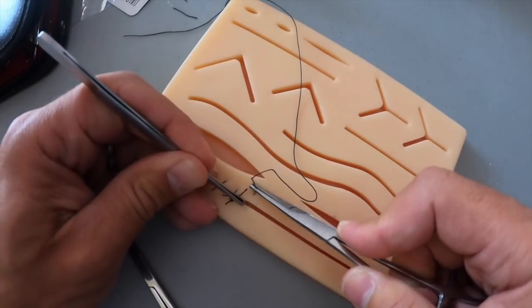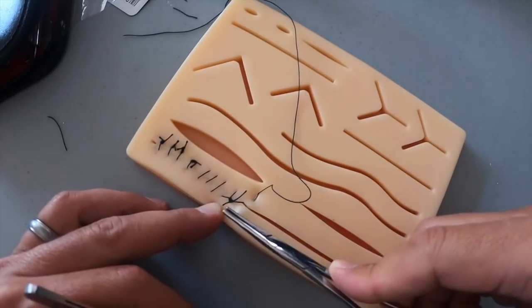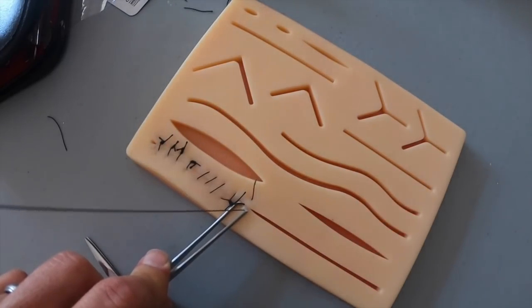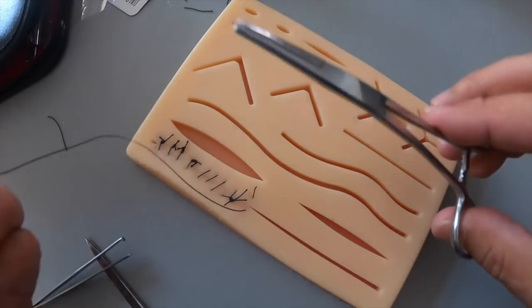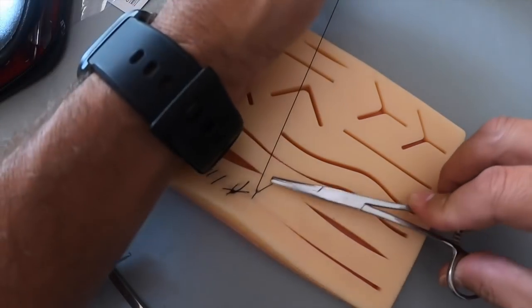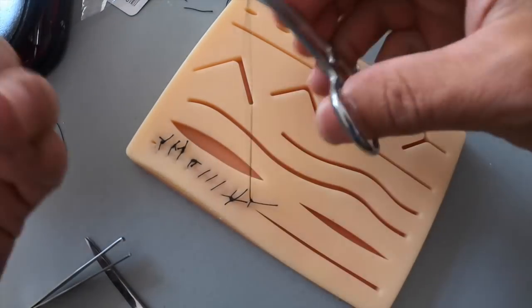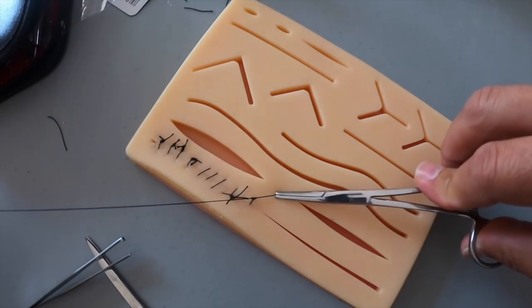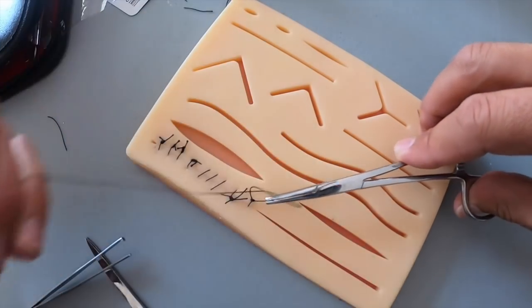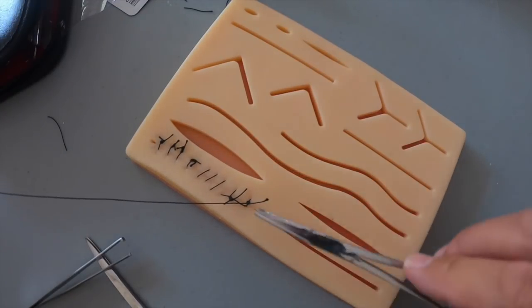Use the forceps to help you pull through, and just like before we're going to do two times forward for a surgeon's knot. Pull and hold and forward, and that's one. And backwards two and forward three and backwards, and the last one should be fine, nice and tight.